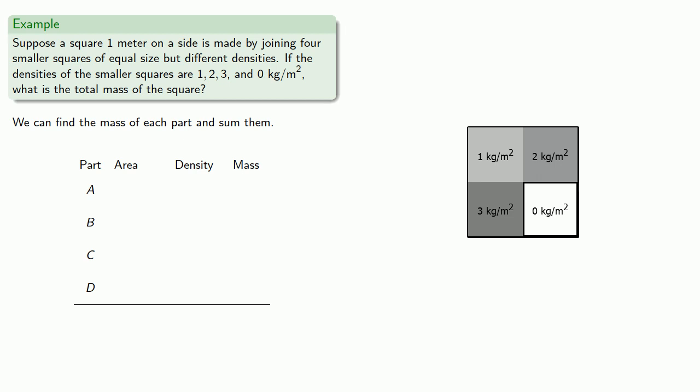Since these four squares are of equal area and the large square has an area of one square meter, then each square has an area of one-quarter square meter.